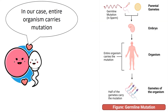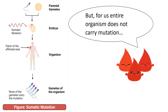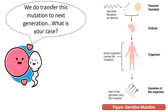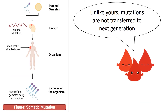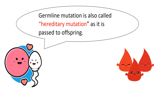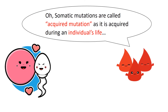In our case, the entire organism carries the mutation. But for us, the entire organism does not carry the mutation. We do transfer this mutation to the next generation. Unlike ours, somatic mutations are not transferred to the next generation. Germline mutation is also called hereditary mutation as it is passed to offspring. Somatic mutations are called acquired mutation as it is acquired during an individual's life.